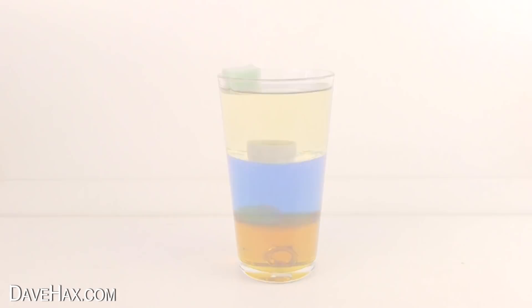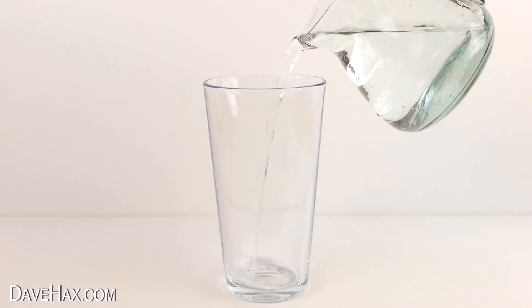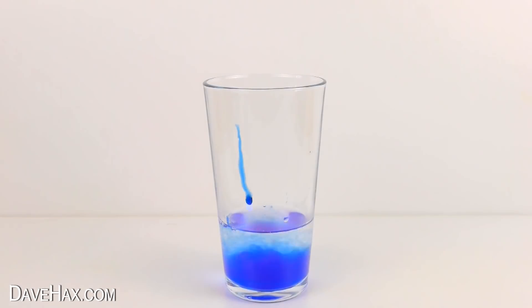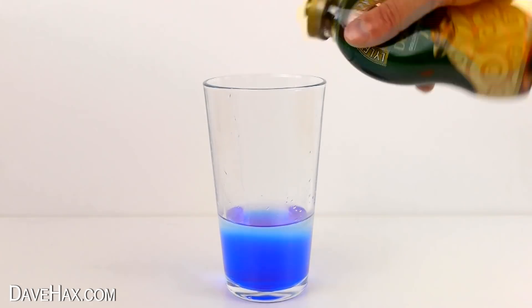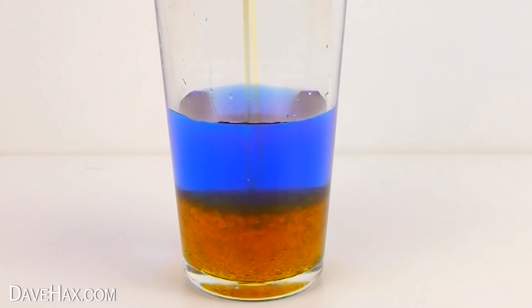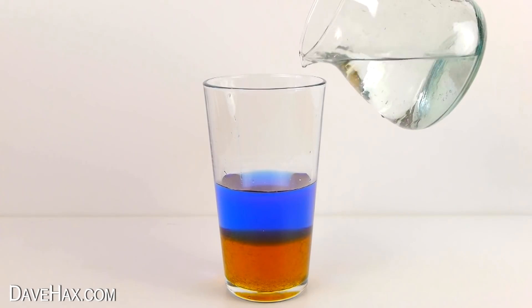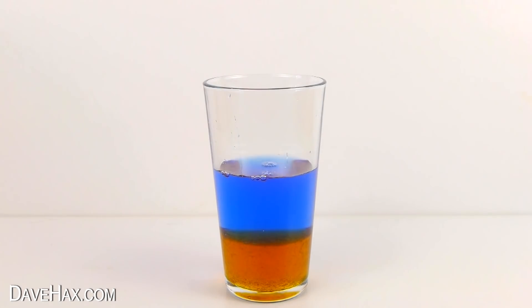Now, on to the experiment. So for this one, I'm taking a drinking glass, pouring in some water and food coloring. Then I'm adding some syrup, and you can see it sinks straight to the bottom of the glass. I added a little bit more water to make the layer a bit bigger.